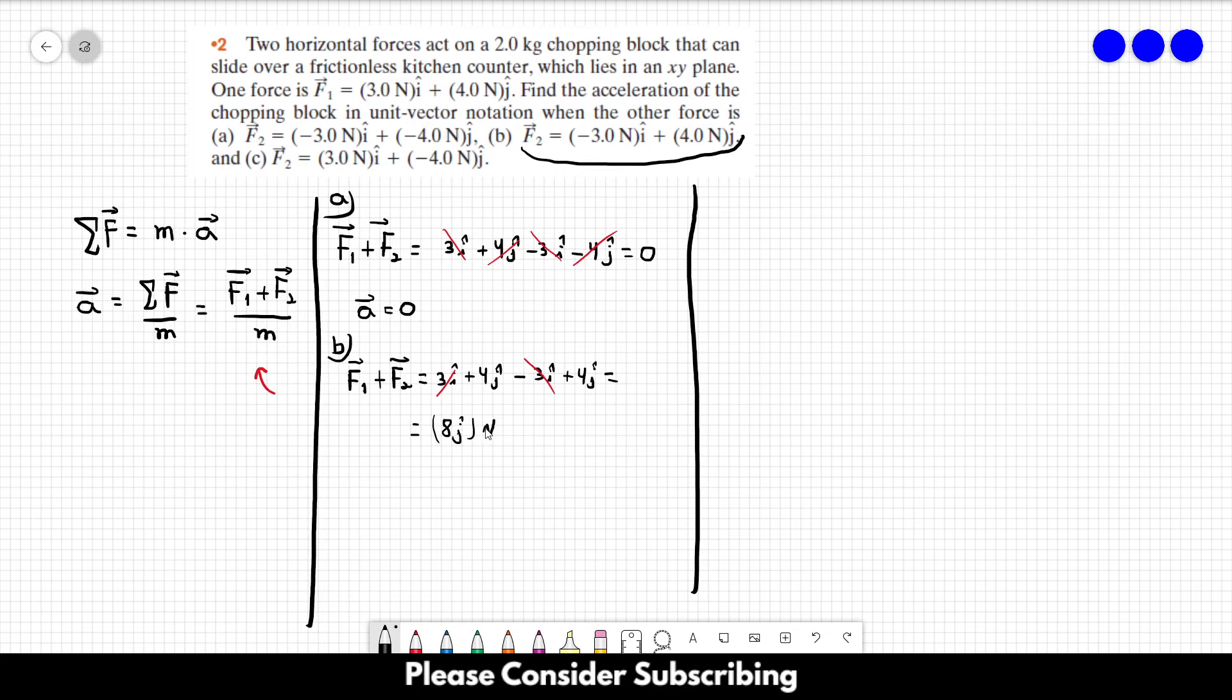This is the sum of the forces for letter B. The acceleration in this case would be eight, which is the sum of the forces in the j direction, over the mass, which is two. So this gives us four in the j direction meters per square second. So this is the answer of letter B.